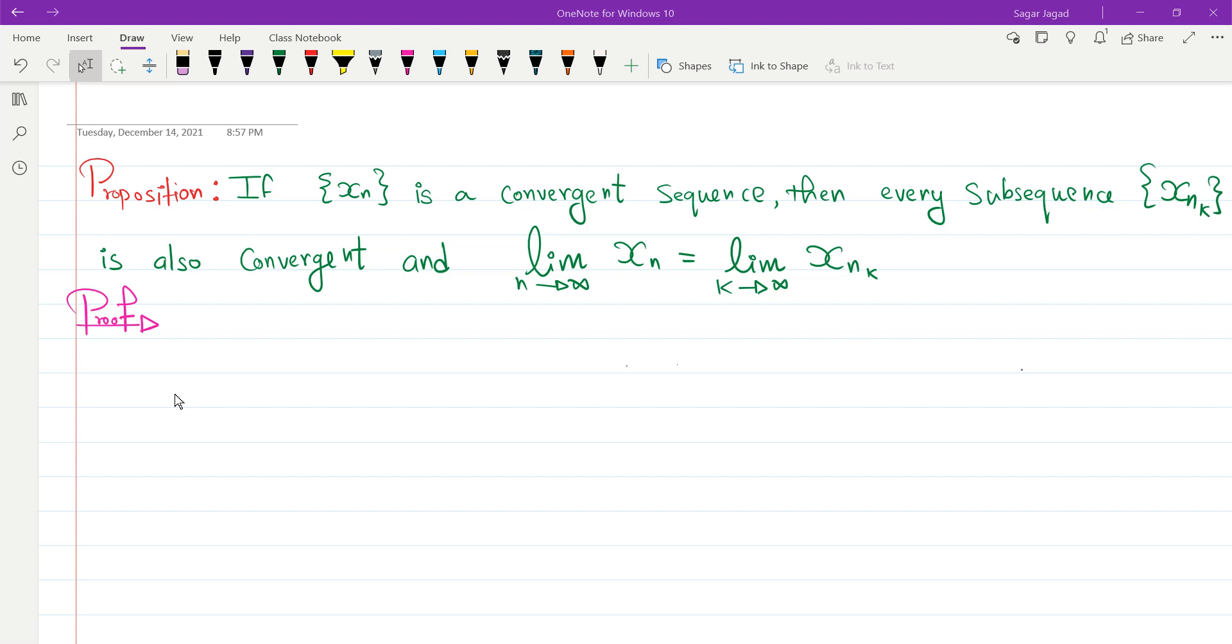Before we start the proof, we will talk about a subsequence of a sequence. Suppose if I have a sequence xn, that means the terms of the sequence would be like x1, x2, x3, and so on. This is my sequence. Any subsequence of it we have denoted by xnk, which will have the terms looking like xn1, xn2, xn3, and so on.